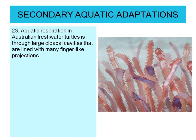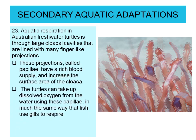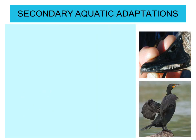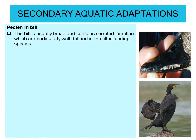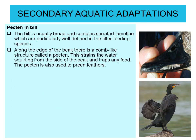Aquatic adaptation is also shown by turtles: aquatic respiration in Australian freshwater turtles occurs through a large cloacal cavity lined by finger-like projections called papillae. These papillae have a rich blood supply and increase the surface area of the cloaca; the turtles take up dissolved oxygen through the papillae, which act as gills. In birds, the bill is usually broad and contains serrated lamellae, particularly well-defined in filter-feeding species. Along the edge of the beak there is a complex structure called pecten that strains water squirting from the side of the beak and traps food.